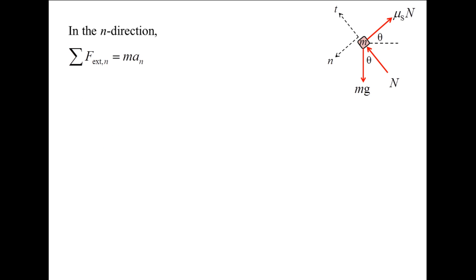The sum of the external forces in the n direction is the n component of the weight, which is mg times sin theta minus the frictional force mu s times n. The normal acceleration is the angular velocity of the block squared times the radius of curvature of the block's path, which is r.